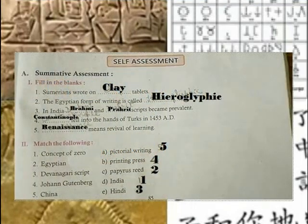Fifth grade Art and Social Studies, Lesson 15: Spread of Knowledge. Knowledge was recorded on clay tablets by the Sumerians and on papyrus by the Egyptians. In India, the Brahmi and Prakrit scripts became prevalent. Constantinople fell, marking the end of an era.